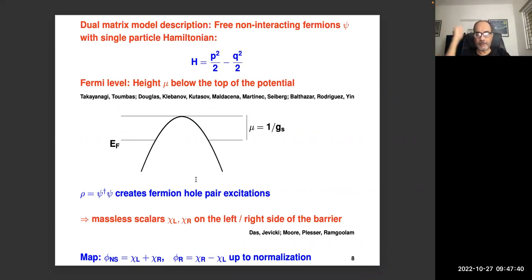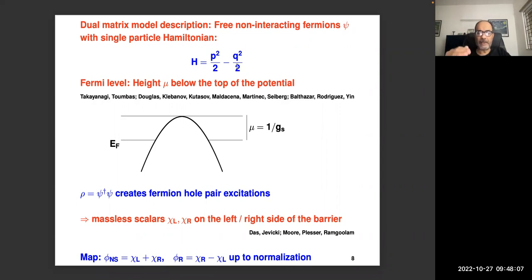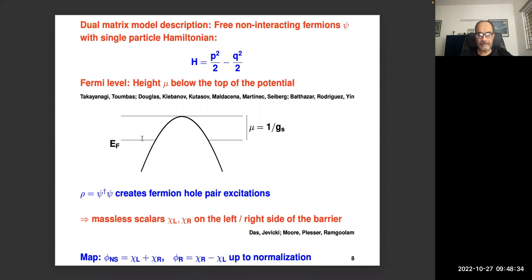Type 0B string theory is interesting because it has a dual matrix model description. The matrix model is very simple: a collection of free non-interacting fermions moving under an inverted harmonic oscillator potential. The single-particle Hamiltonian each fermion sees is q²/2 − p²/2. This is unbounded from below, but because these are fermions we can fill all energy levels below a certain value and define a Fermi sea. The Fermi level is set at a height μ below the top of the potential.